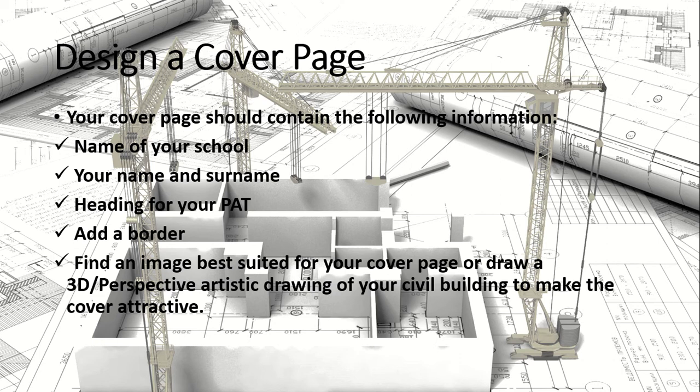We are going to start with the design of a cover page for your PAT. The cover page should contain the following: the name of your school, your name and surname, your grade, and a heading for your PAT — something that connects with the scenario. Also add a border for each page from here onwards, and find an image best suited for the cover page, or you can draw a 3D or perspective artistic drawing of your civil building to make your cover attractive.